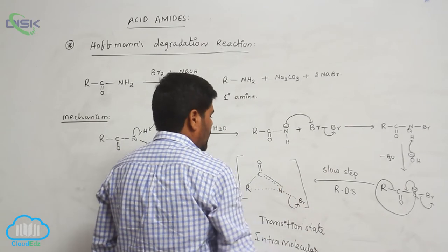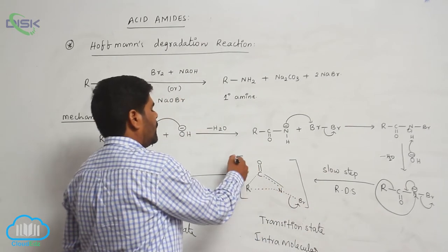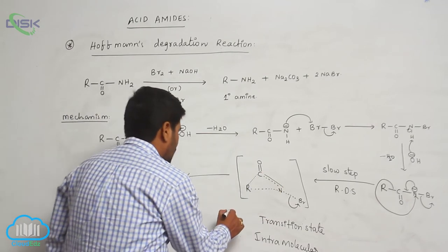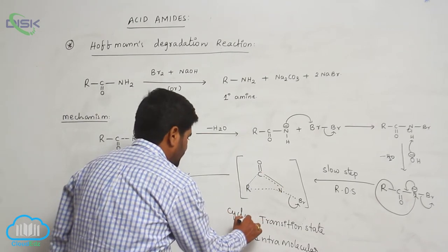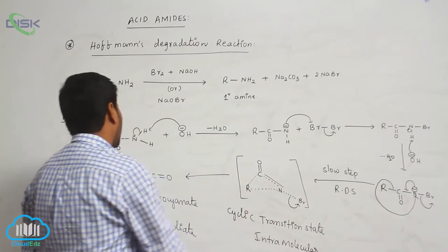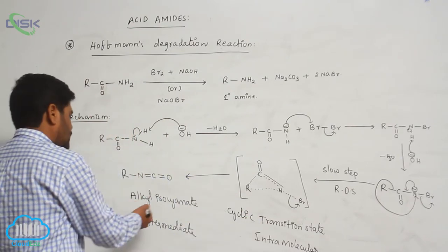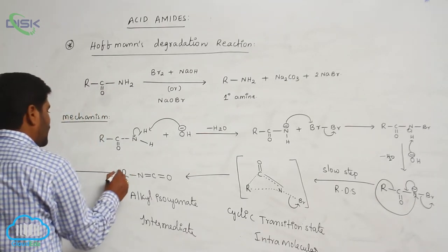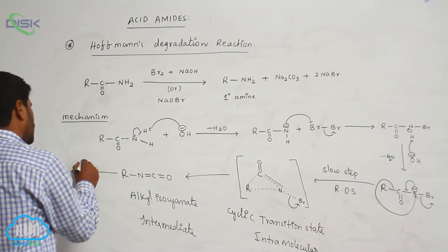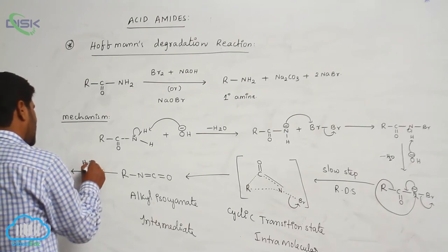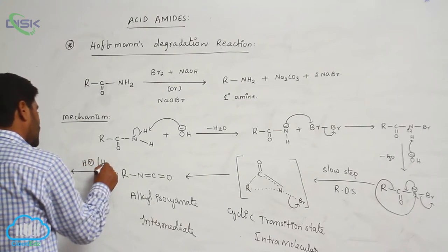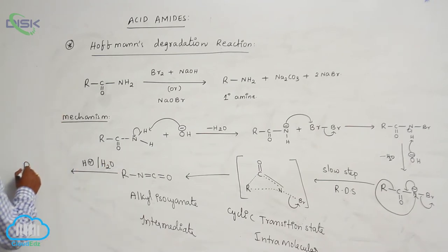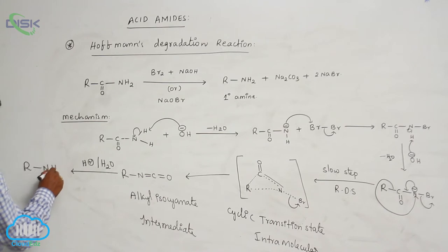This particular migration step is the slow step, and it forms a cyclic transition state. This cyclic transition state converts into alkyl isocyanate. On acidic hydrolysis, the isocyanate converts into RNH2 — a primary amine.